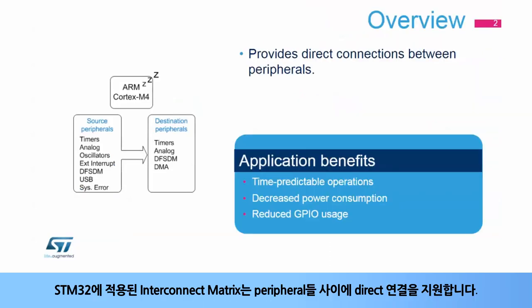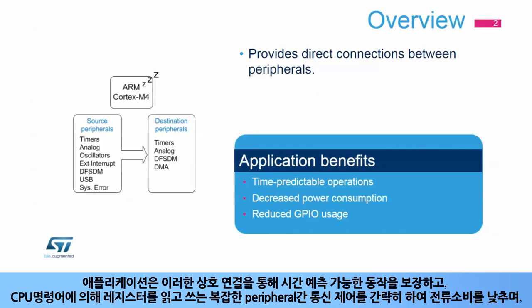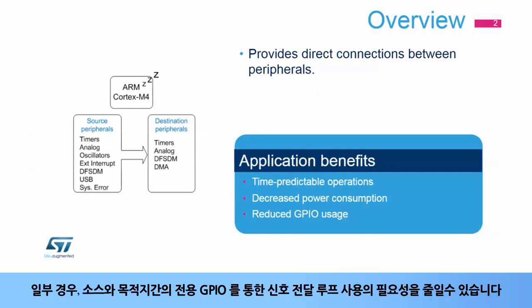The interconnect matrix integrated inside STM32 products provides direct connections between peripherals. Applications benefit from these interconnections to ensure time-predictable operations, to decrease power consumption by avoiding complex management of peripheral communications through reading and writing registers using CPU instructions, and in some cases reducing the need to loop the signal from a source to a destination through a dedicated GPIO.